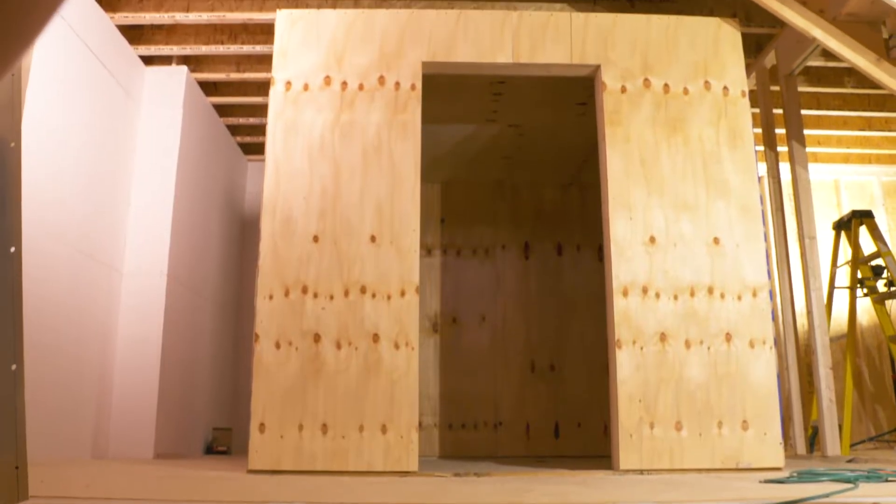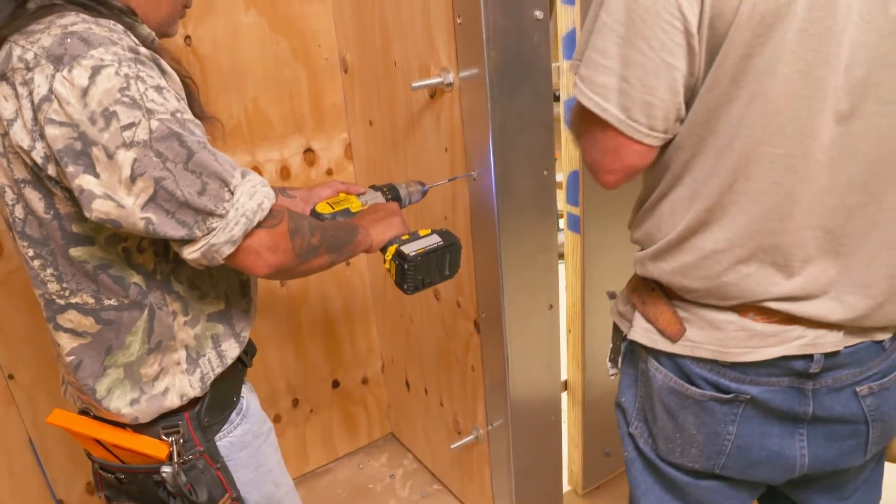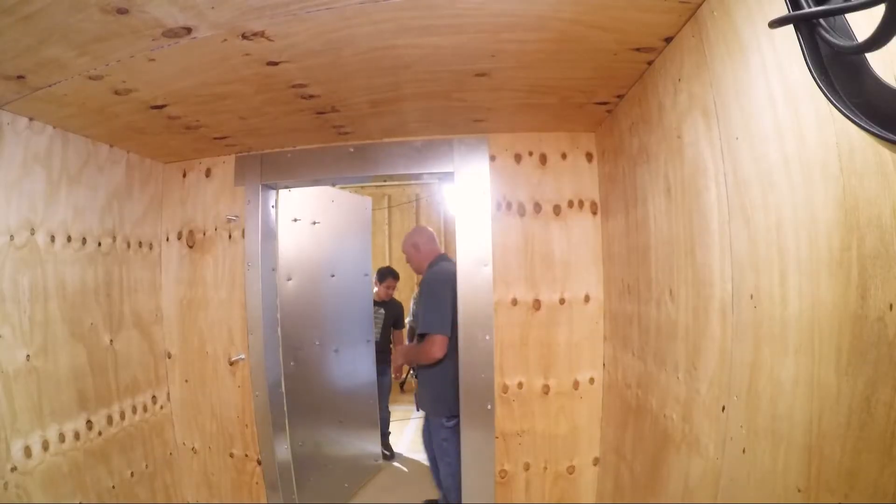Before building and hanging the door, install three custom-made 14-gauge steel angles around the perimeter of the door frame to provide additional reinforcement to the door frame.